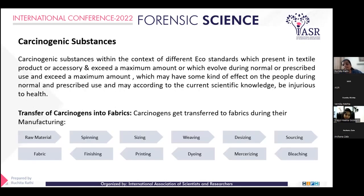Now, what are carcinogenic substances? Carcinogenic substances are those which are hazardous for us, for the environment, and for human beings. These elements present in fabric produce harmful effects if they are used beyond the permissible range — it becomes hazardous for health as well as for the environment. The question is how they get transferred to the fabrics.